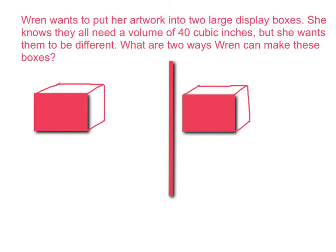Here's another example that might help you. Wren wants to put her artwork into two large display boxes. She knows they all need a volume of 40 cubic inches, but she wants them to be different. What are two ways Wren can make these boxes? The first thing we need to know is how much is the volume? The volume is 40 cubic inches. So that means we have to have three dimensions that equal 40. We need to have a length, a width, and a height that all equal 40 inches.